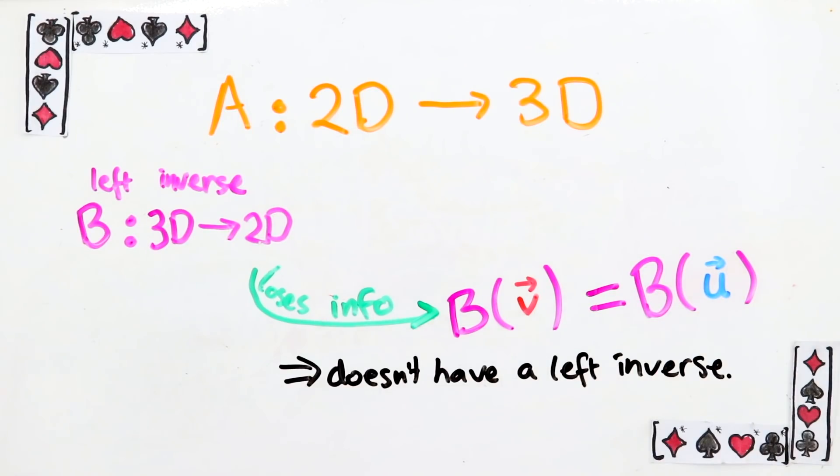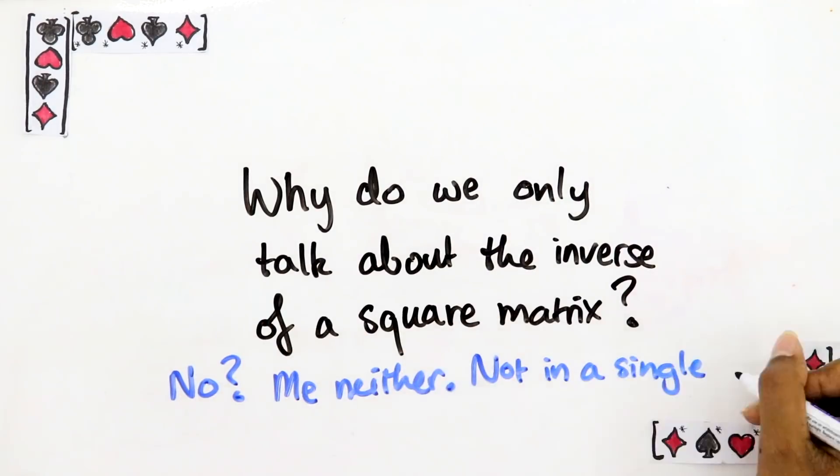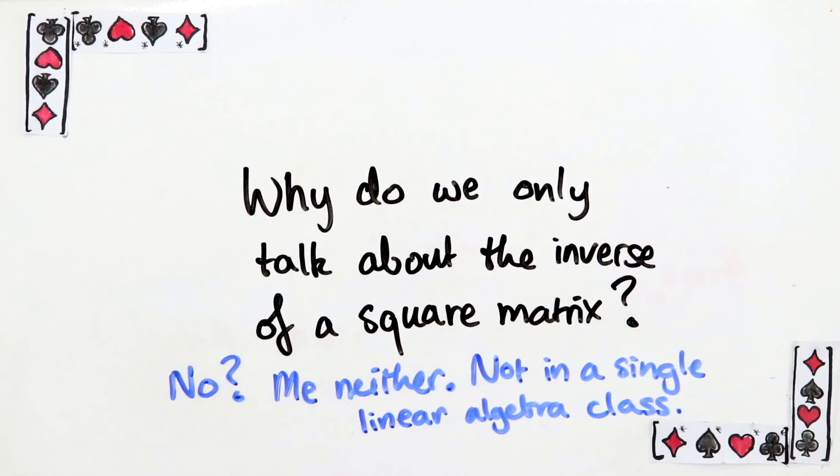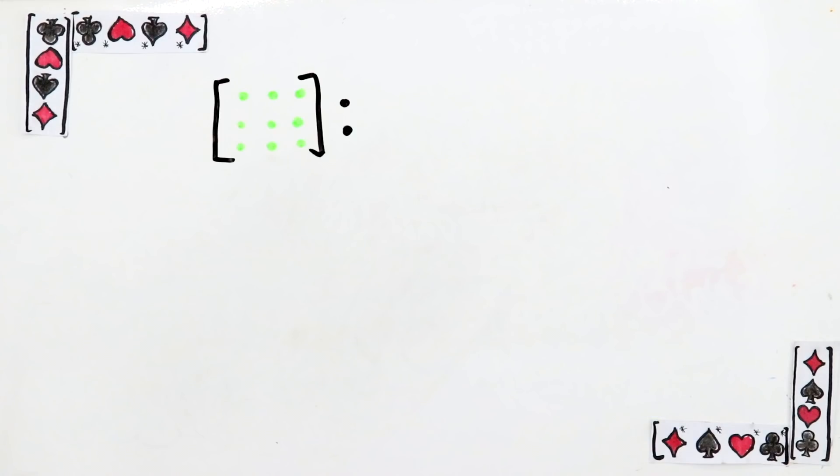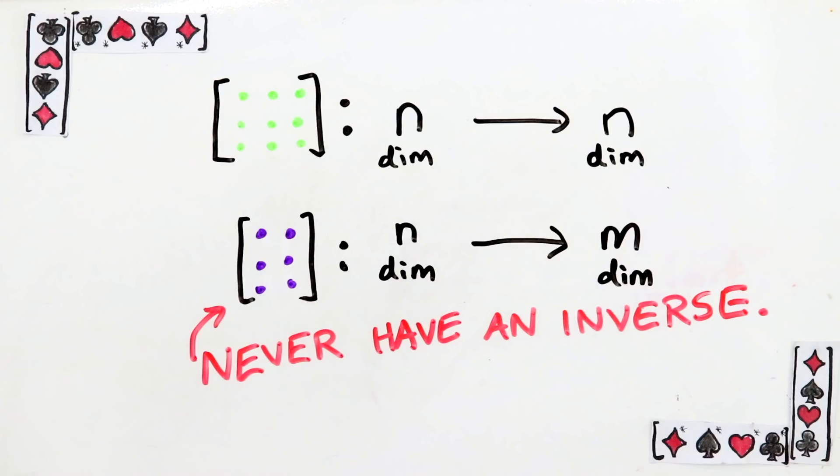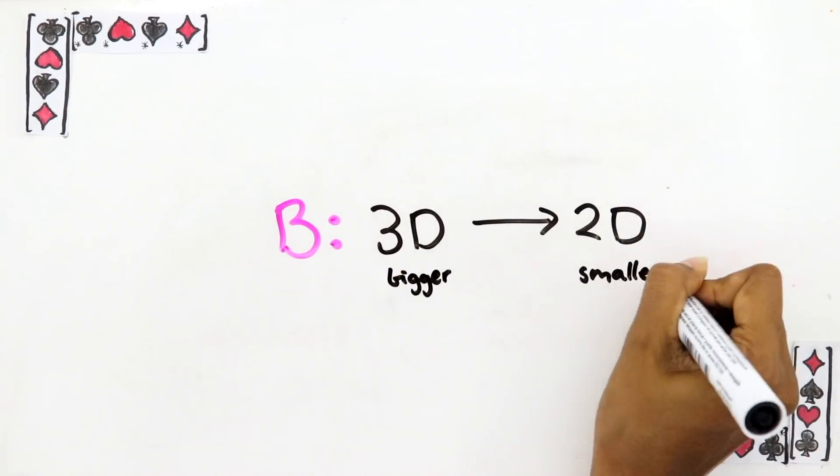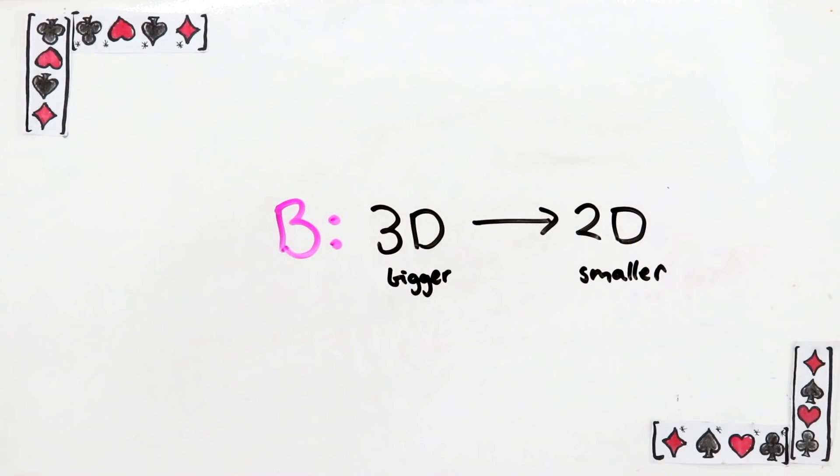There's an important lesson to be drawn from this example. You might have wondered why we only ever talk about the inverses of square matrices. What's so special about transformations from n dimensions to n dimensions? The reason is, non-square matrices, i.e. ones from n dimensions to m dimensions, never have an inverse. The issue is, if you have any transformation going from a bigger space to a smaller space, like B, which went from 3D to 2D, you have to lose information. These types of matrices always send some vectors to the same place.